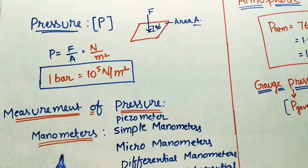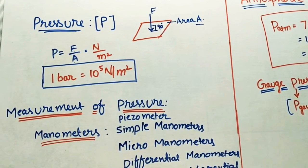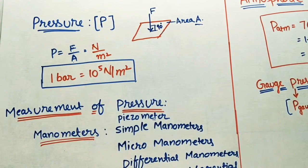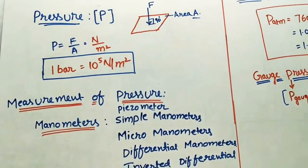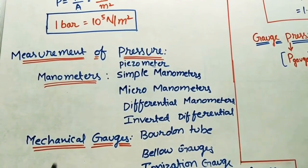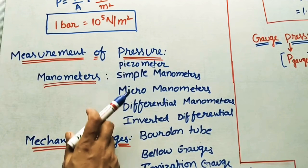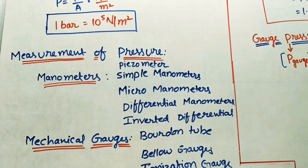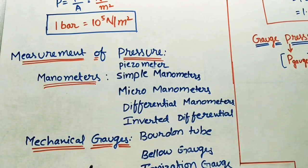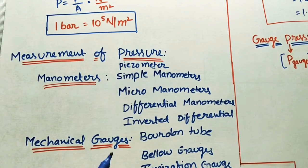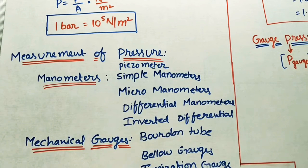To find pressure in a given vessel, boiler, or turbine, we use different instruments. We use manometers and mechanical gauges. In thermodynamics we don't cover the working process of these instruments in detail — that is covered in fluid mechanics and instrumentation and control systems. A link will be provided in the description box.